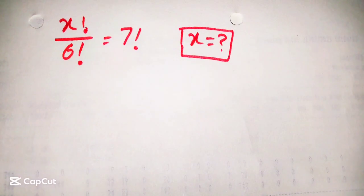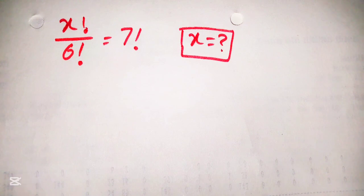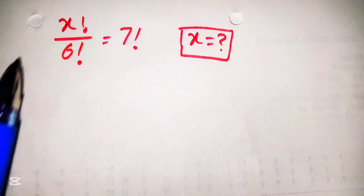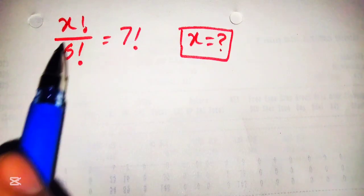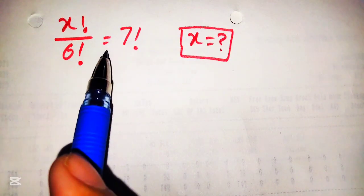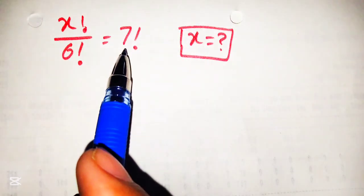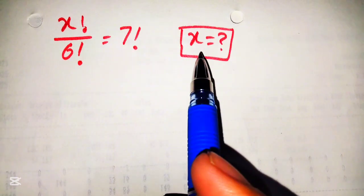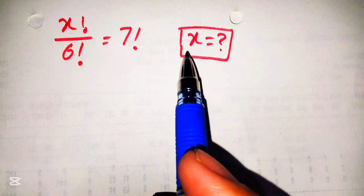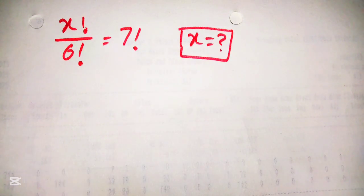Hello guys, welcome to my YouTube channel Olymped Edge. Hopefully you are doing well. Today we are going to solve a very nice algebraic equation which involves factorial. It is given as x factorial over 6 factorial is equal to 7 factorial, and we have to find the value of x. So let's start the solution.